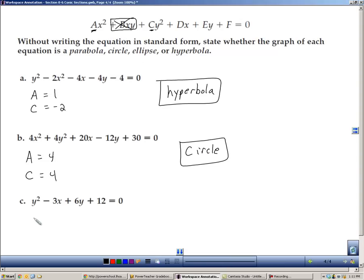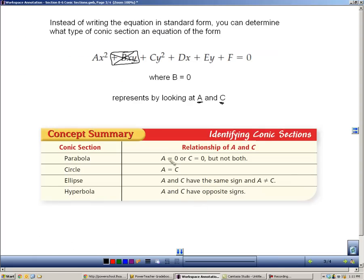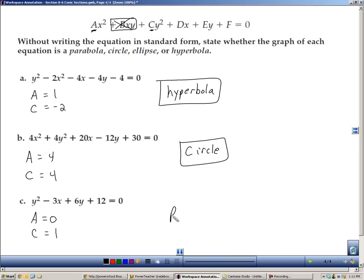And in c, my A is 0, because I don't have an x² term, and my C is 1. So back here, if A is 0 or C is 0, but not both, we know that this third one is a parabola.